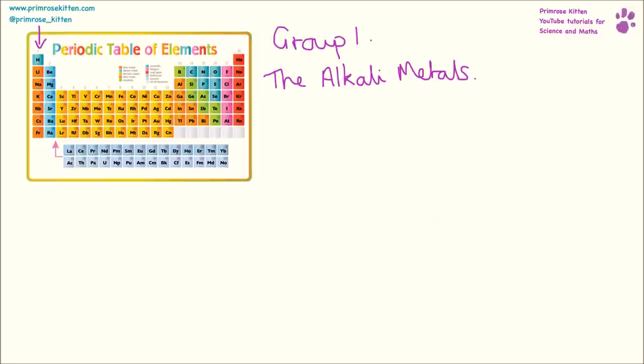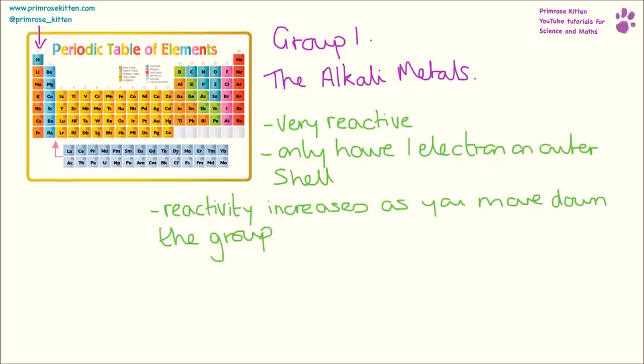Over on the far left hand side of the periodic table, we have group one, also known as the alkali metals. These are very, very reactive as they only have one electron in the outer shell, which they are desperate to get rid of. The reactivity increases as you move down the group. So things at the bottom are more reactive than things at the top.